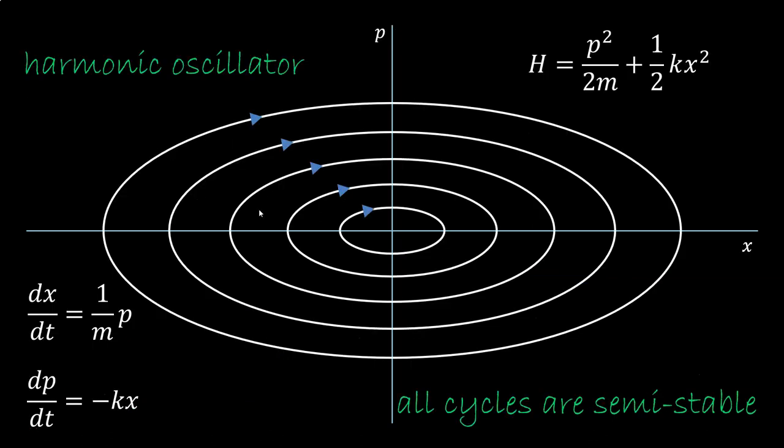This is the phase space diagram of a harmonic oscillator. This is a set of equations, and this is a Hamiltonian. You start at a point, and you cycle around the ellipses. Momentum goes up and down, position goes up and down.